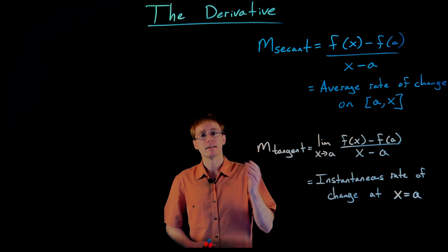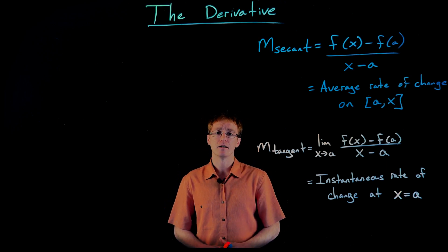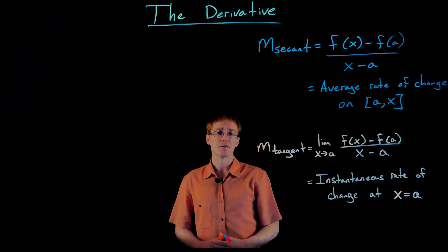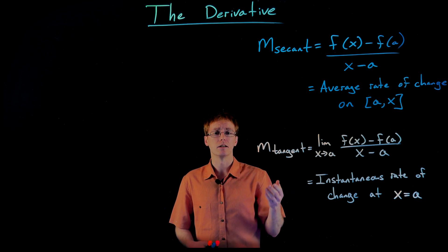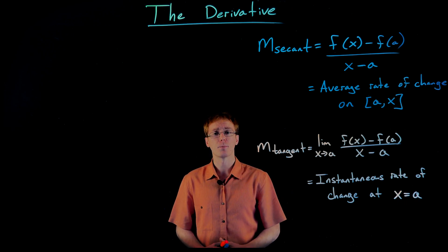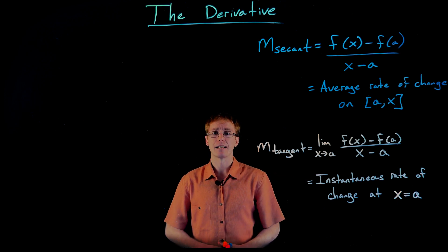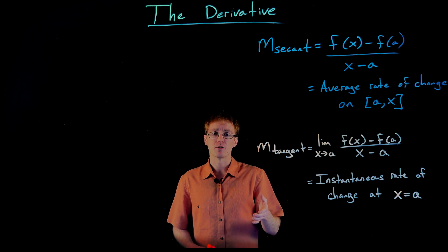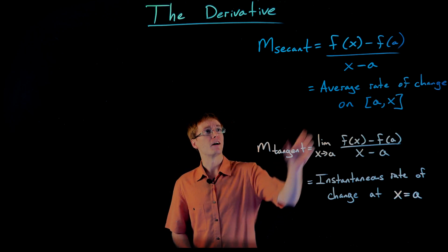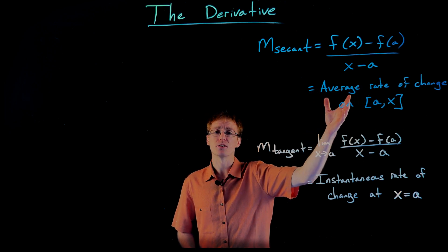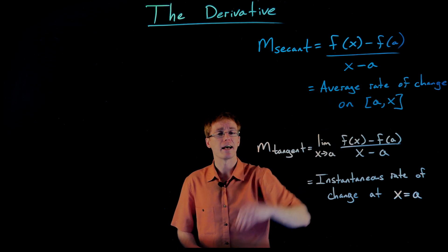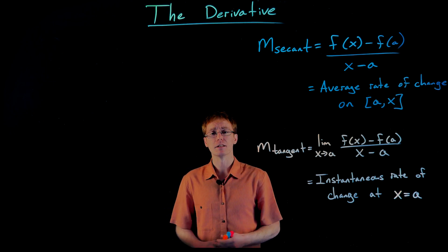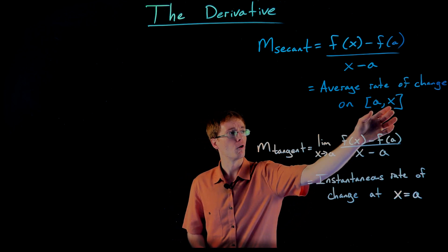Whenever we've been finding these slopes of tangent lines, we start by finding slopes of secant lines, which we could do using our slope formula. And then to go from the secant line to the tangent line, we just take the limit as x approaches a. This goes back to that very first example we looked at with the falling toy helicopter. We found the slopes of the secant lines initially, and that interpretation was they were finding the average velocity of the falling toy helicopter over some time interval.